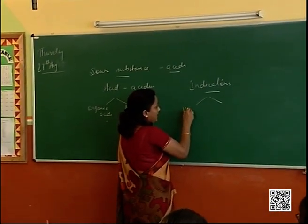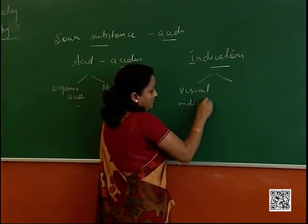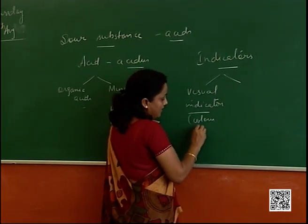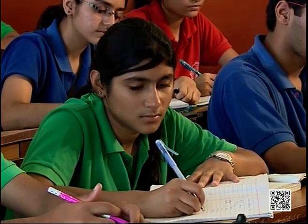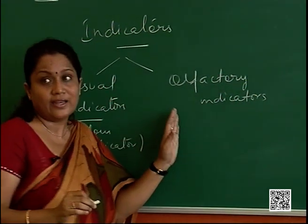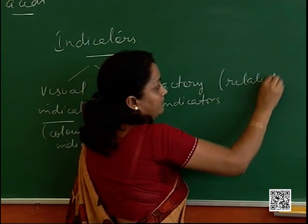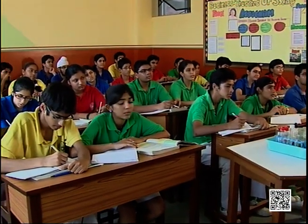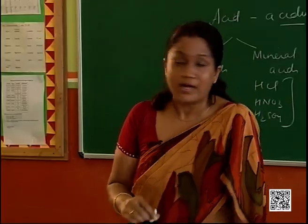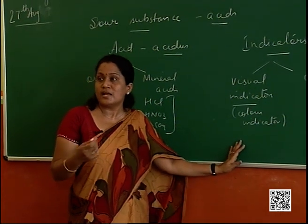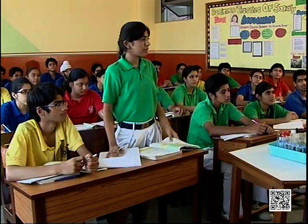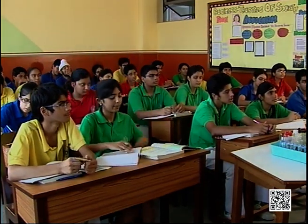Indicators are classified into two categories: visual indicators, which change color — you see the color change and identify whether the substance is an acid — and olfactory indicators, which are related to the sense of smell. You smell a substance with a peculiar smell and if it changes its smell, that tells you whether it's acidic or basic. For visual indicators, there are natural indicators found in everyday use — for example, turmeric, china rose petals extract, and red cabbage leaves.